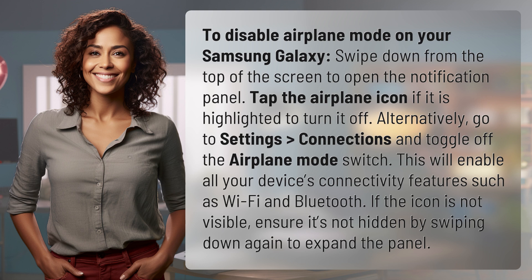This will enable all your device's connectivity features such as Wi-Fi and Bluetooth. If the icon is not visible, ensure it's not hidden by swiping down again to expand the panel.